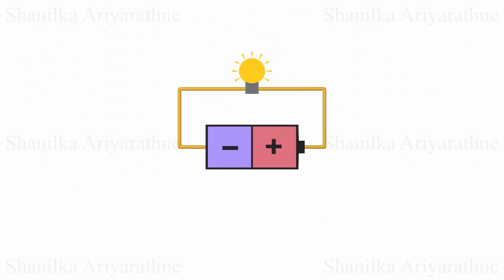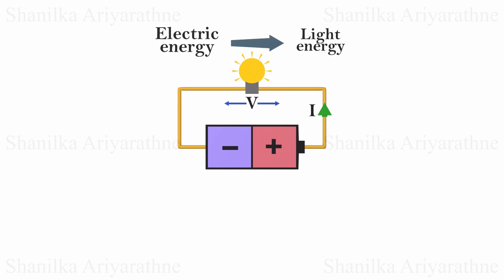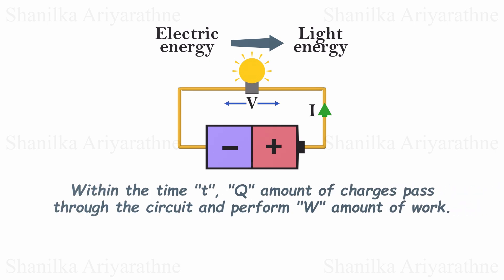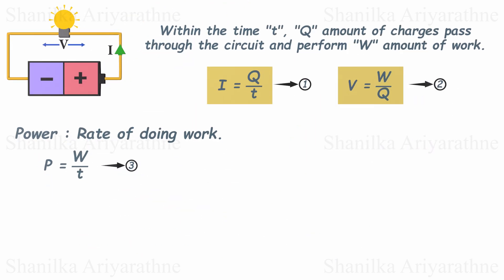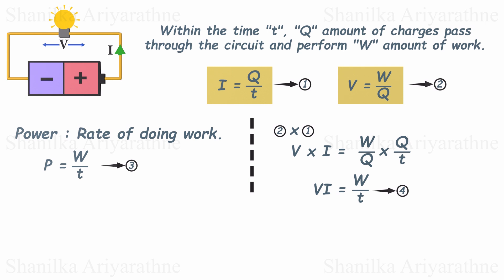Now we are going to talk about electrical power. Consider this simple circuit. When we apply a voltage V across the light bulb, a current I starts to flow through it. Let's assume the light bulb converts all the energy it uses into light. If within time T, Q amount of charges pass through the circuit and perform W amount of work, we can use the definitions of current and voltage. Power is defined as the rate of doing work, or the amount of work done each second. So the power consumed by the light bulb equals W divided by T.